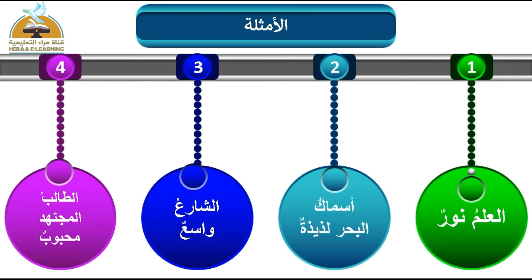الخبر غالباً يأخذ تنويناً بالضم. المثال الرابع: الطالب المجتهد محبوب. أول كلمة في الجملة هي الطالب، فهي المبتدأ مرفوع وعلامة رفعه الضمة. كلمة المجتهد ليست خبراً لأنها لو وقفنا عندها لم تكمل لنا معنى الجملة. إذن الخبر هو محبوب، خبر مرفوع وعلامة رفعه الضمة، ونضع تنويناً بالضم لأن الكلمة خالية من الألف واللام.